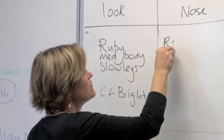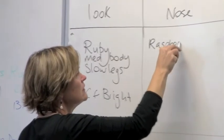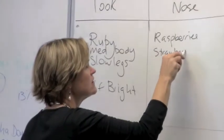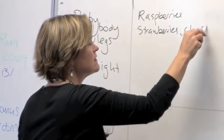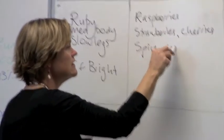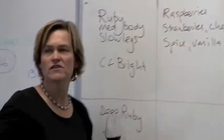So we've seen, we've got raspberries, strawberries, cherries, red cherries, there's some spice, vanilla, tell other words, what else have you got?